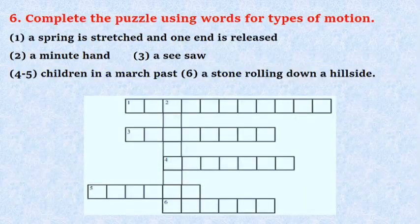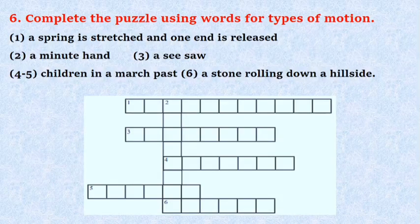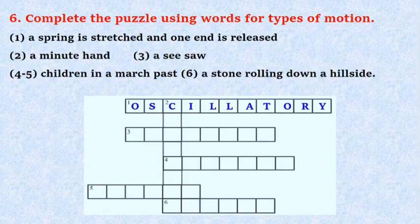Question Number 6. Complete the puzzle using words for types of motion. First, a spring is stretched and one end is released. Answer is Oscillatory. Second, a minute hand. Answer is Circular.